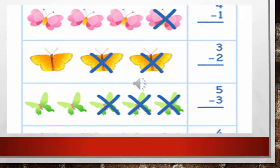In the last row, there are 5 butterflies and 3 we have crossed. So we will write the sum as 5 minus 3, and the answer will be 2. The remainder will be 2, the difference will be 2, the answer will be 2.